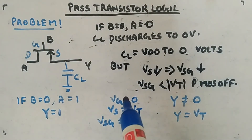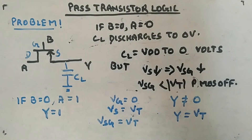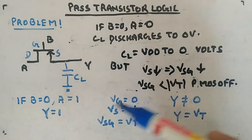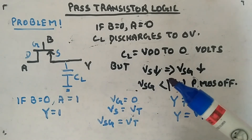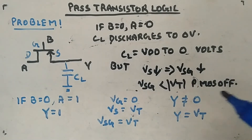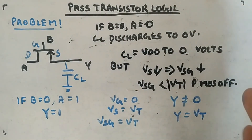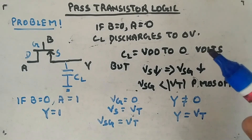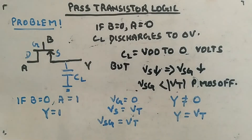These two problems — NMOS not passing VDD fully and PMOS not passing 0V fully — are overcome by the transmission gate, which uses both PMOS and NMOS together. Although pass transistor logic can be used to design any gate, multiplexers, or decoders, due to these weak-1 and weak-0 problems we move toward transmission gates, which can also be used to make all such circuits.